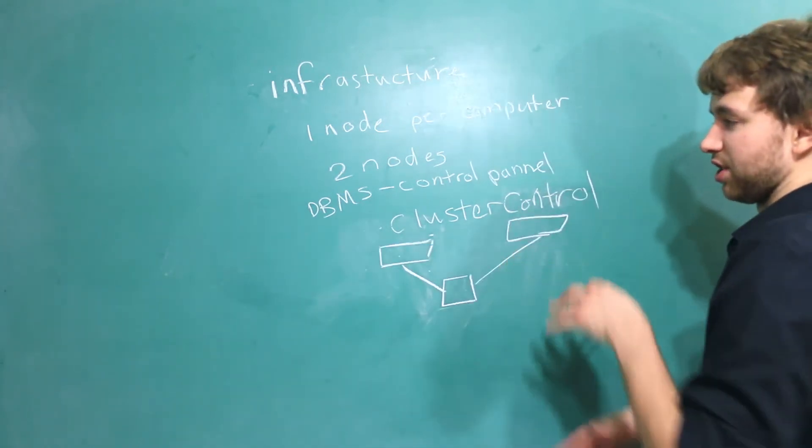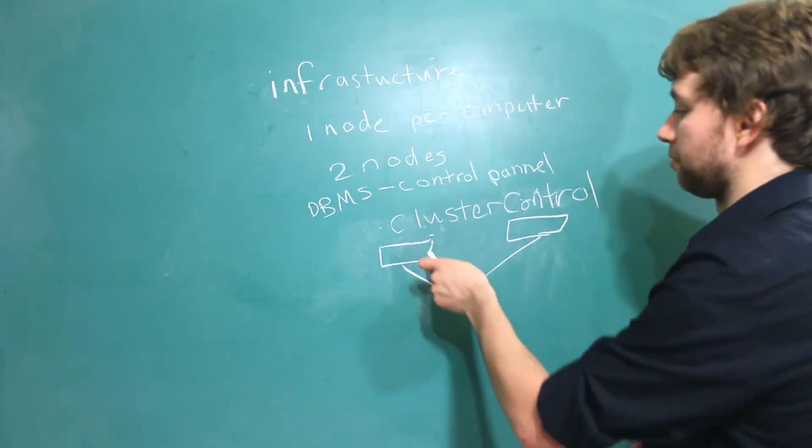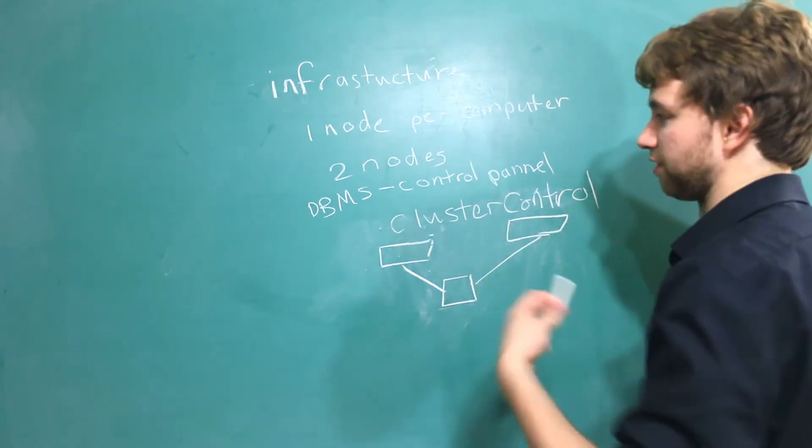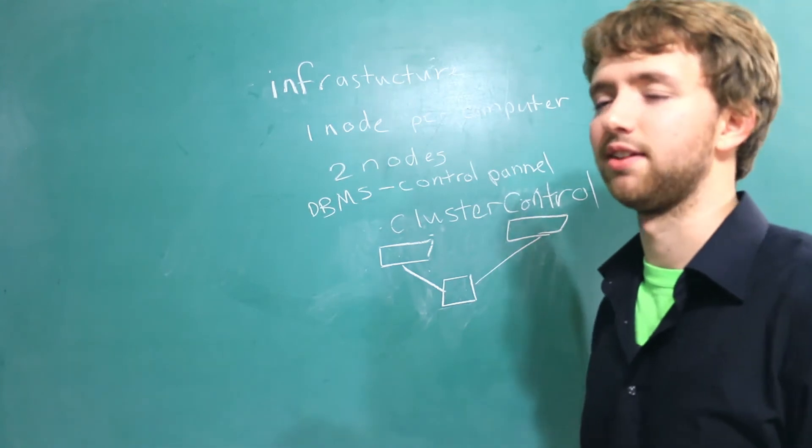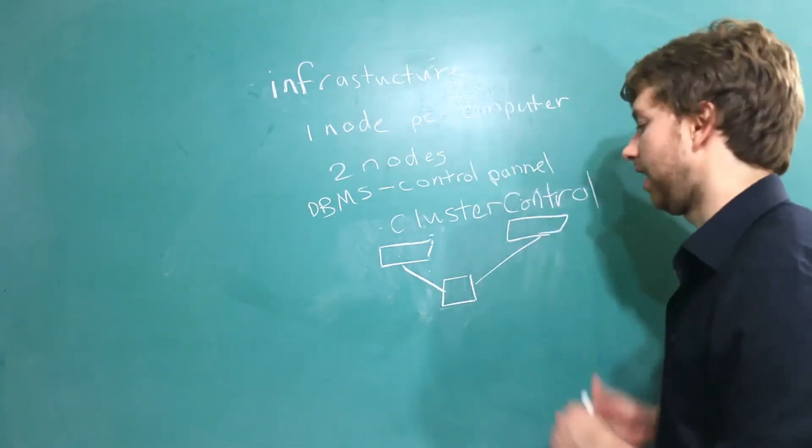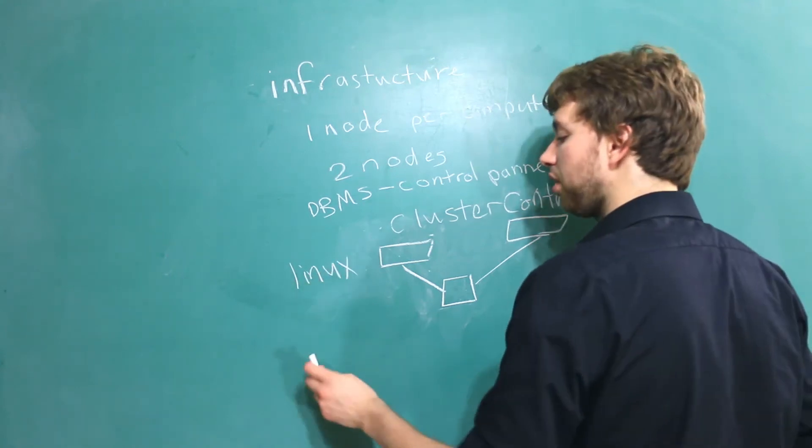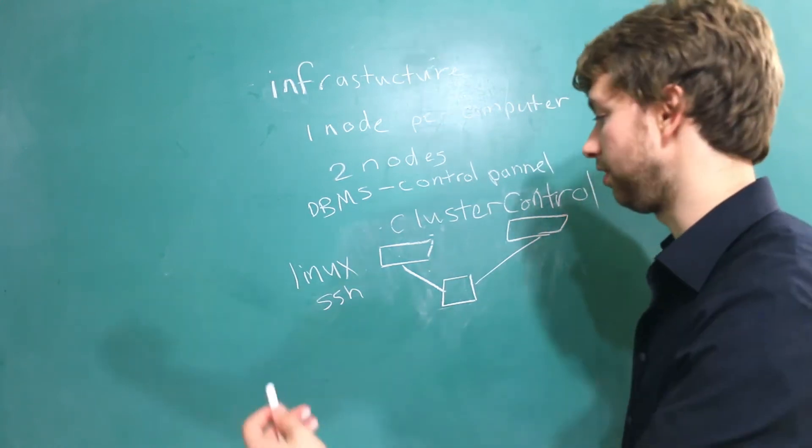So we're going to have essentially the database management system or cluster control on a computer by itself. And then we're going to have two nodes. Generally you'll have an odd number of nodes, but for simplicity I don't really feel like setting up three, but one doesn't really make sense so we're going to go with two. And these are actually going to be Linux virtual machines. And part of Linux is SSH and this allows computers to talk with one another.